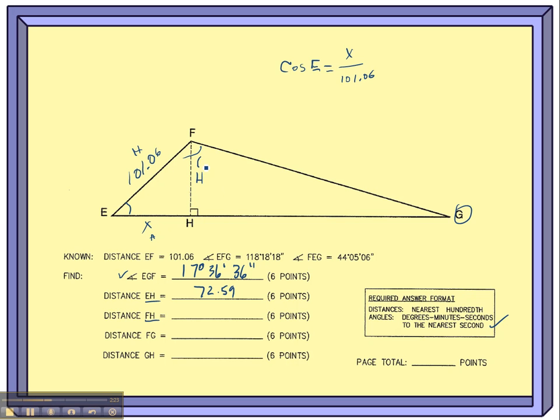Now this is the opposite side over the hypotenuse. This time I'm going to use sine of angle E equals my opposite side, which I'm going to call H, over still 101.06. So I would still multiply the 101.06 over. And notice that the only difference in the calculation is going to be the fact that I'm using sine instead of cosine.